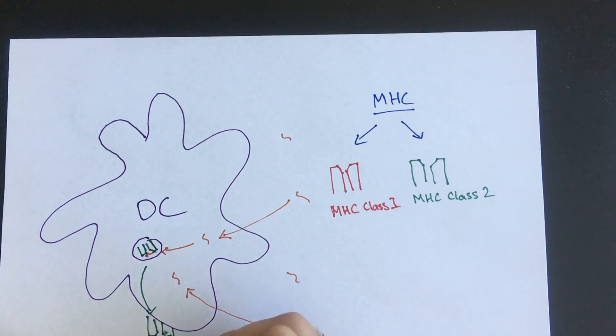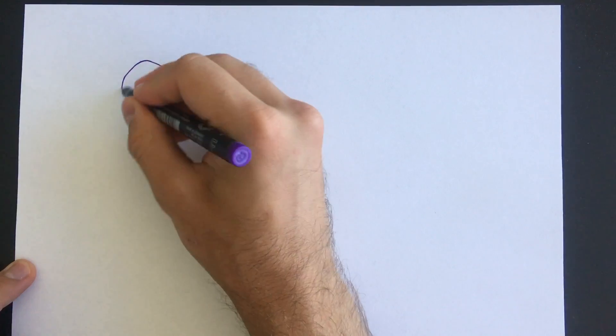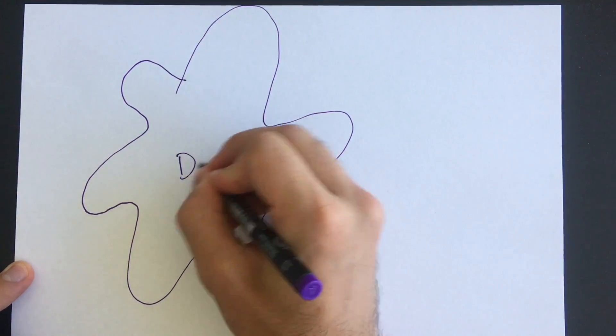In their original immature state, dendritic cells are very good at taking up and processing antigens, but they are not great at presenting and activating T cells. So what needs to happen is for the dendritic cell to receive a signal from the environment that there is an infection or inflammation occurring.